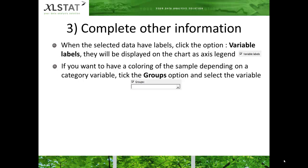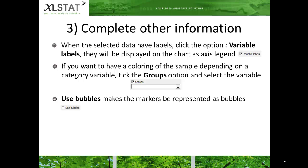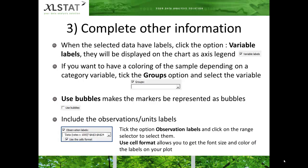It is possible to use a category variable to group the samples by color in the plot. The Bubbles option enables you to have a display as bubbles. Also, you may wish to include observations or unit labels. In this case, tick the option Observation Labels and click on the range selector to select them. You can also click on the option Use Cell Format to get the font size and color of the labels in your plot.